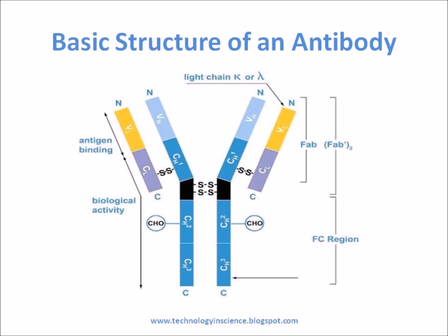An antibody is a multi-chain protein secreted in order to fight with antigens which enter the body, thereby preventing possible infections. Generally, an antibody is a polypeptide of 4 chains, having 2 identical light chains and 2 identical heavy chains. Antibodies are glycoproteins.